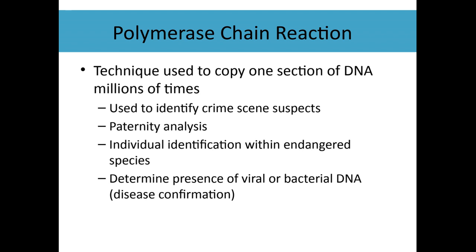PCR can be used to identify crime scene suspects — you can take a tiny little swab of DNA from a crime scene and make enough copies to match it to a person. It's used for paternity analysis and to identify individuals either within a human population or in endangered species, like figuring out how many different elephants or foxes are in a population from poop samples. And we can also use it to confirm whether someone has a disease, just like with those COVID tests.